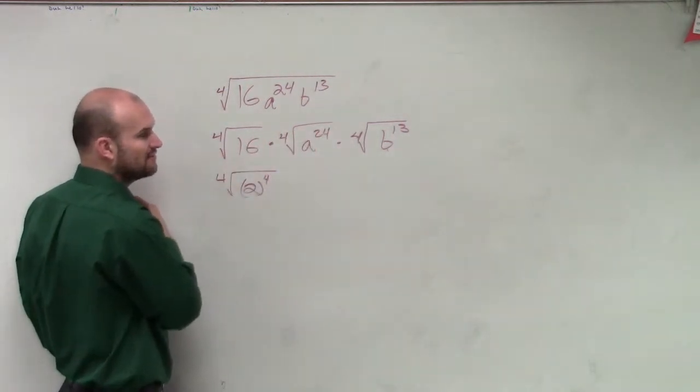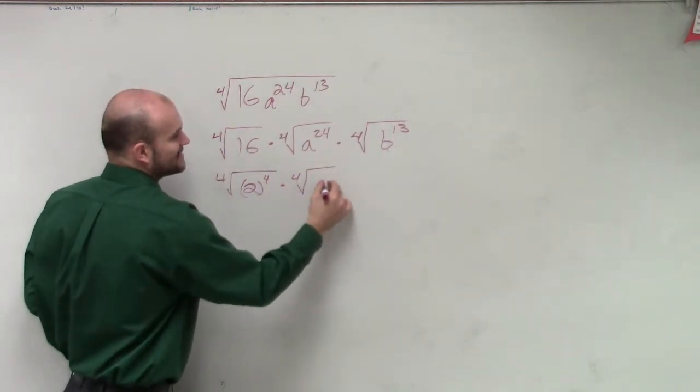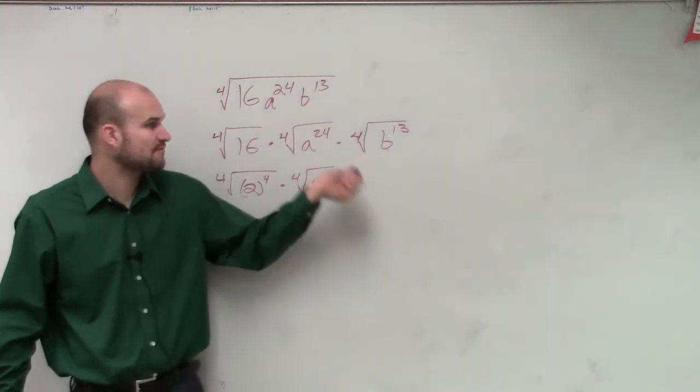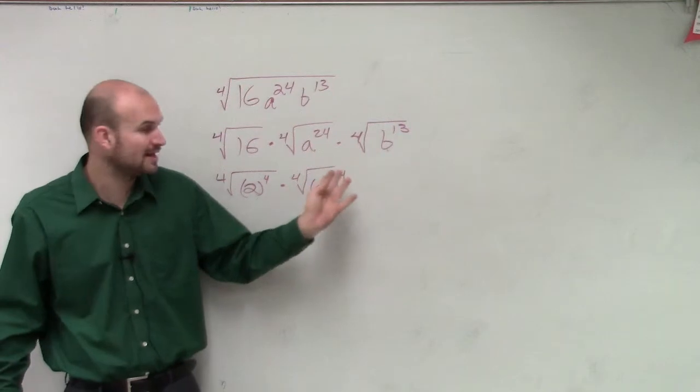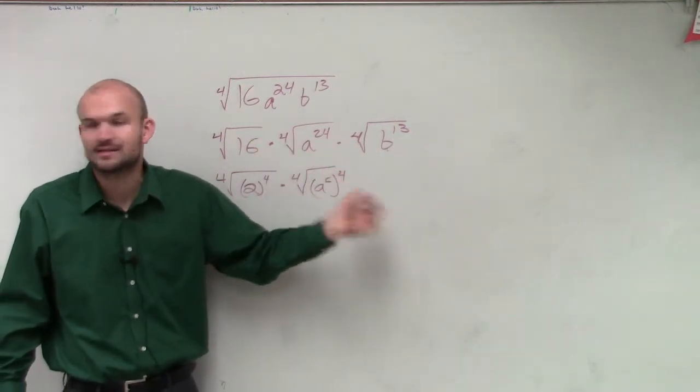What about a to the twenty-fourth? Right, so we could say a to the sixth to the fourth power, right? Because remember 6 times 4 is going to give us 24, right? But I don't want to write it as a to the fourth to the sixth power because the powers and then my roots would not cancel out.